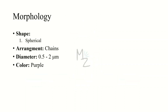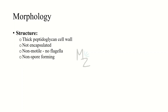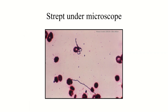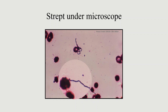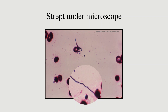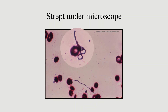Morphology: Streptococcus viridans is spherical in shape, arranged in chains, and its diameter varies from 0.5 to 2 micrometers. It is purple in color because it is a gram-positive bacterium. Structurally, it has a thick peptidoglycan cell wall and is not encapsulated. It is non-motile due to the absence of a motility apparatus like a flagellum, and it is non-spore forming. As you can visualize, under the microscope these bacteria appear round and spherical, arranged in chains, purple in color, with a diameter of 0.5 to 2 micrometers.